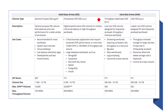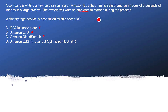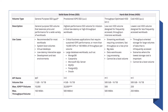Now let's look at the storage options provided by EBS. They can be categorized into two main categories: SSD and HDD. When you want to go for lower cost, you go with HDD. HDD is suited for streaming workloads, big data, data warehouses, large processing jobs, and it cannot be used as a boot volume.